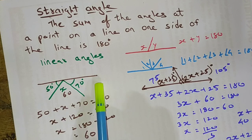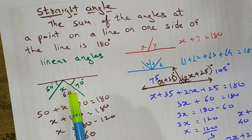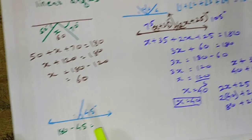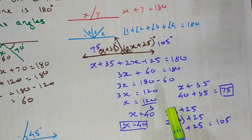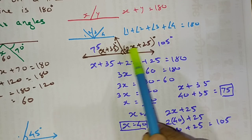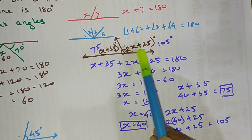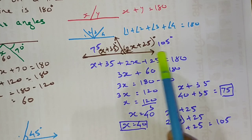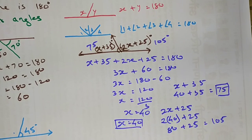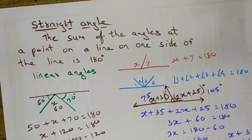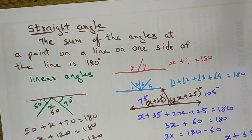We have seen simpler sums where you only find the value of x with just two given angles — very simple. And here it was a little bit more complex, with values given as x plus 35 and 2x plus 25. We know that they sum up to 180 and we have calculated the value of each angle.